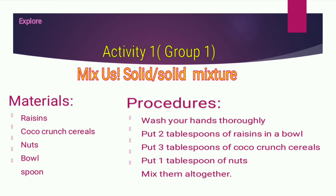For Group One, you have Activity One: Mix a solid and solid mixture. You are going to use the following materials — raisins, Coco Crunch cereals, nuts, a bowl, and a spoon.